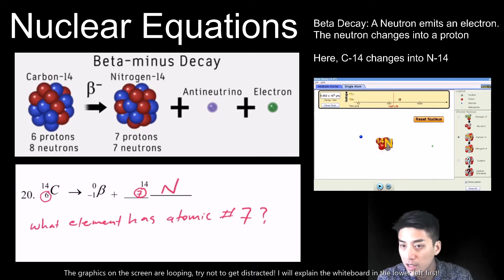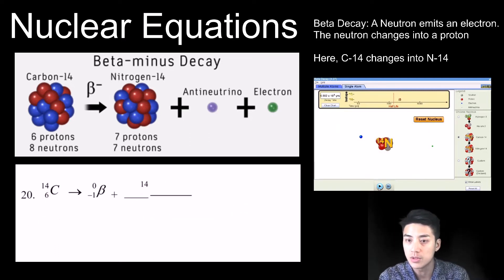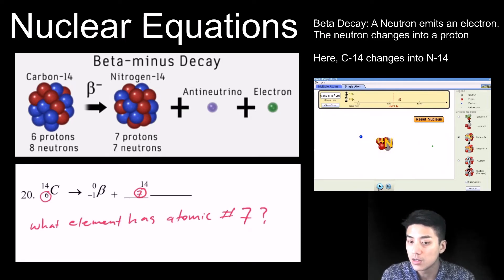Now for problem number 20, we are looking at beta decay. And beta decay is represented by a weird looking symbol. It's 0 over negative 1 with a beta symbol. So that just represents one of the electrons that's coming off.